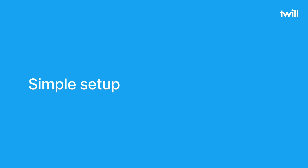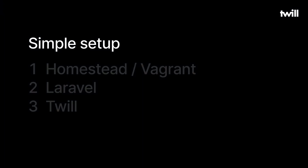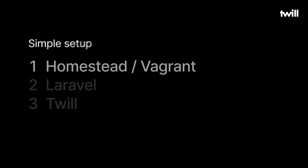Two pieces of software you will need from the beginning are VirtualBox and Vagrant. I will have some notes below with more information about this episode and links to the software and further configuration. We're going to first set up Homestead and Vagrant, get that running as our local server, then install and configure Laravel, and finally install and configure Twill.